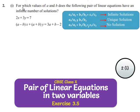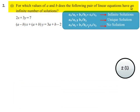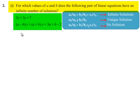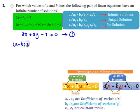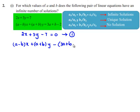Coming to the first bit of the second problem: for which values of a and b does the following pair of linear equations have an infinite number of solutions? The first equation given is 2x plus 3y equals 7, which can be written as 2x plus 3y minus 7 equals 0 — let this be equation number 1. The second equation can be written as (a minus b)x plus (a plus b)y minus (3a plus b minus 2) equals 0 — this is equation number 2.